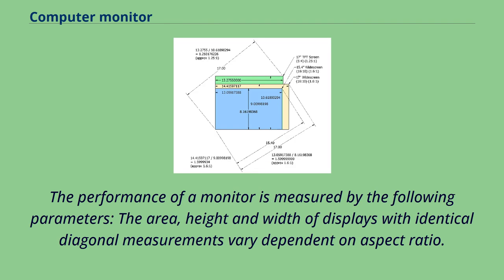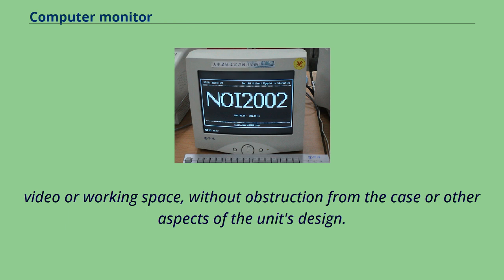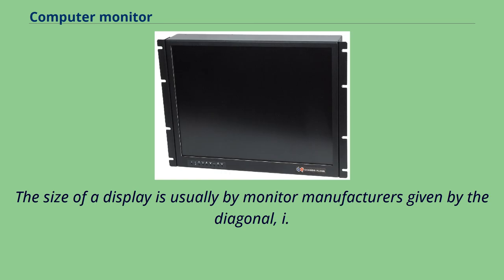The performance of a monitor is measured by the following parameters. The area, height and width of displays with identical diagonal measurements vary dependent on aspect ratio. On two-dimensional display devices such as computer monitors, the display size or viewable image size is the actual amount of screen space available to display a picture, video or working space, without obstruction from the case or other aspects of the unit's design. The main measurements for display devices are width, height, total area and the diagonal. The size of a display is usually given by manufacturers as the diagonal, i.e., the distance between two opposite screen corners.